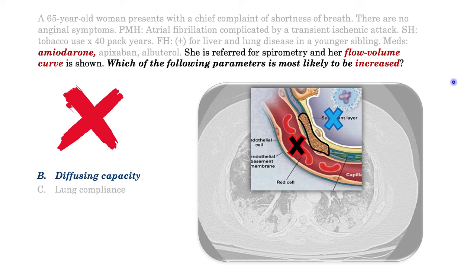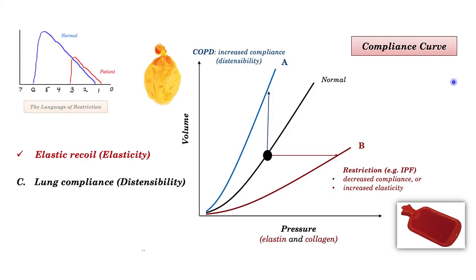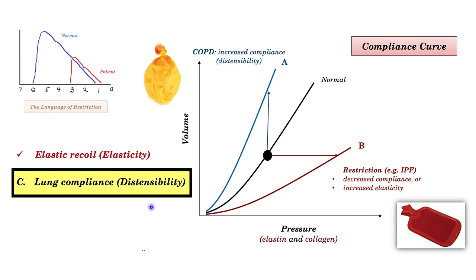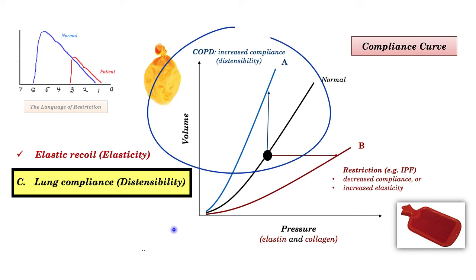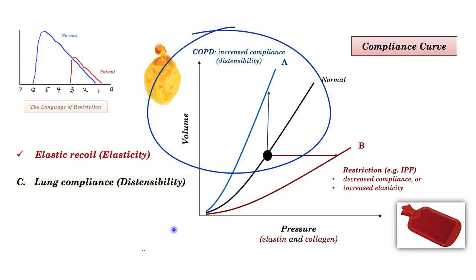Here is the key take-home: the interpretation of the compliance curve. This has beguiled students for years — it is a difficult concept. The easiest way to think about the compliance curve is to think about distensibility, that is, the ability to get air into the lungs. In a patient with COPD with loss of elastin, it is easy to expand the lungs — that is, increase volume under lower pressure.